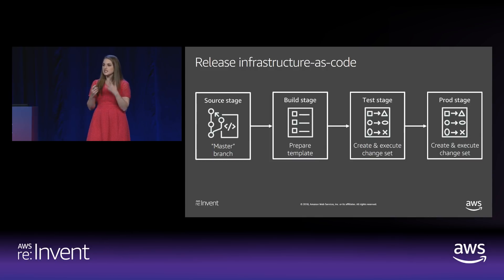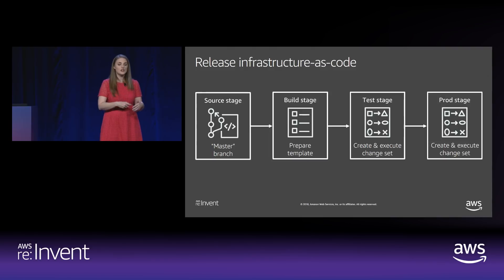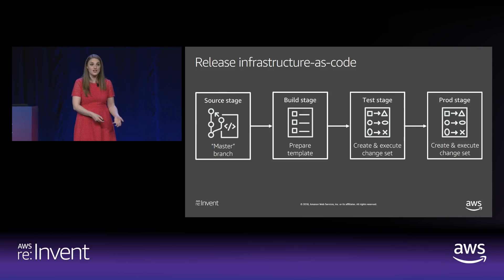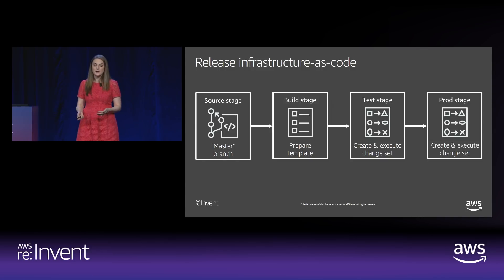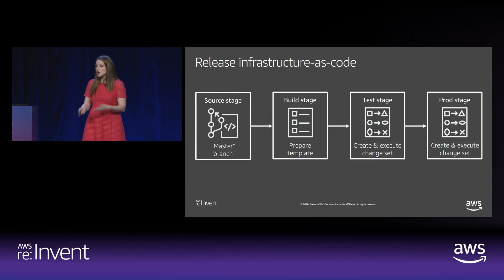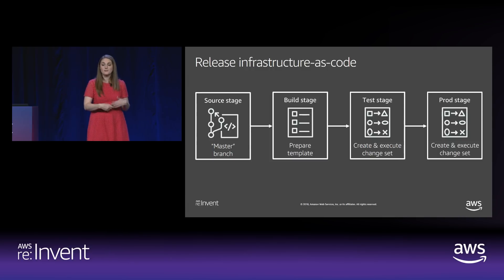Using the exact same tools for infrastructure as code and continuous deployment: an example pipeline would have a source code repository and master branch where you check changes in, then a build stage to prepare a template, then a test stage where you're deploying into a staging environment — if you're using CodeDeploy, that means creating and executing a change set — and then the exact same thing for production. The exact same templates are deployed into staging and then into production.